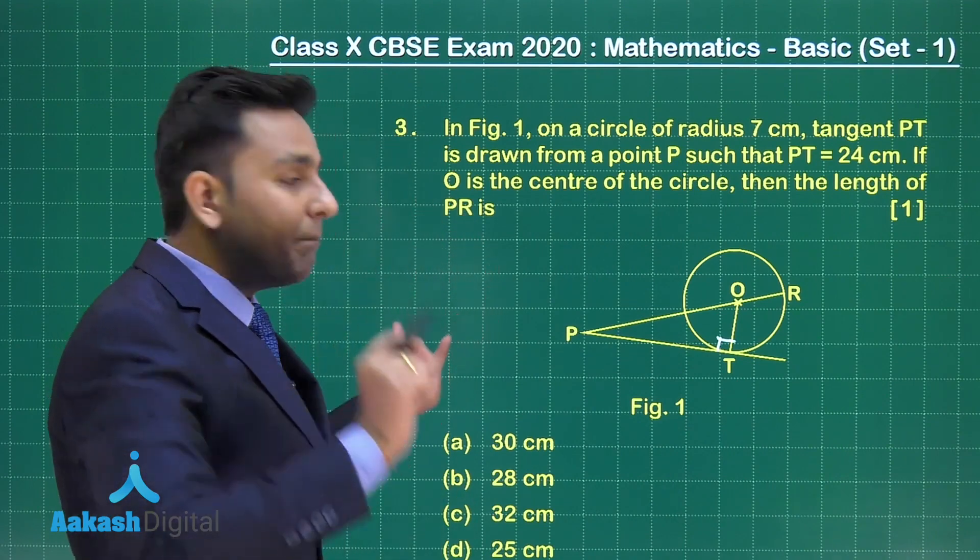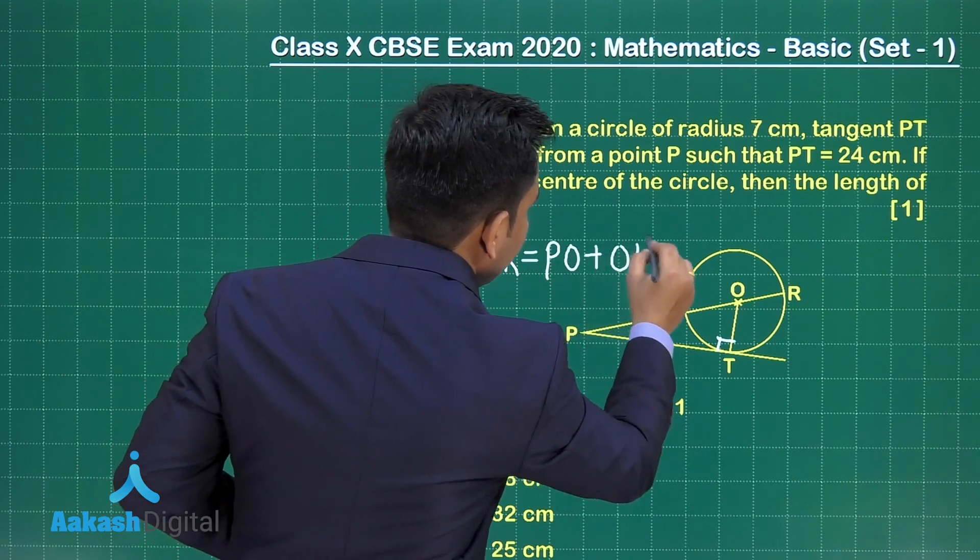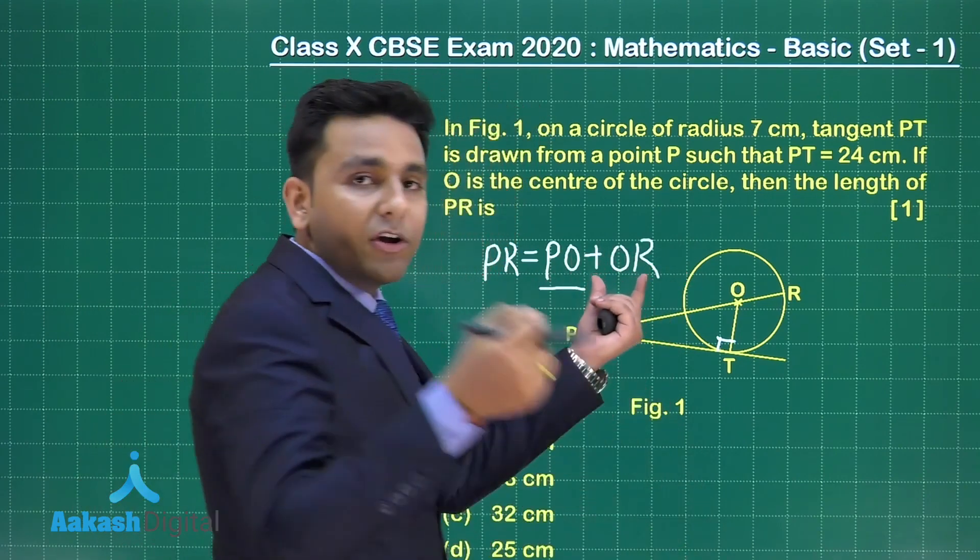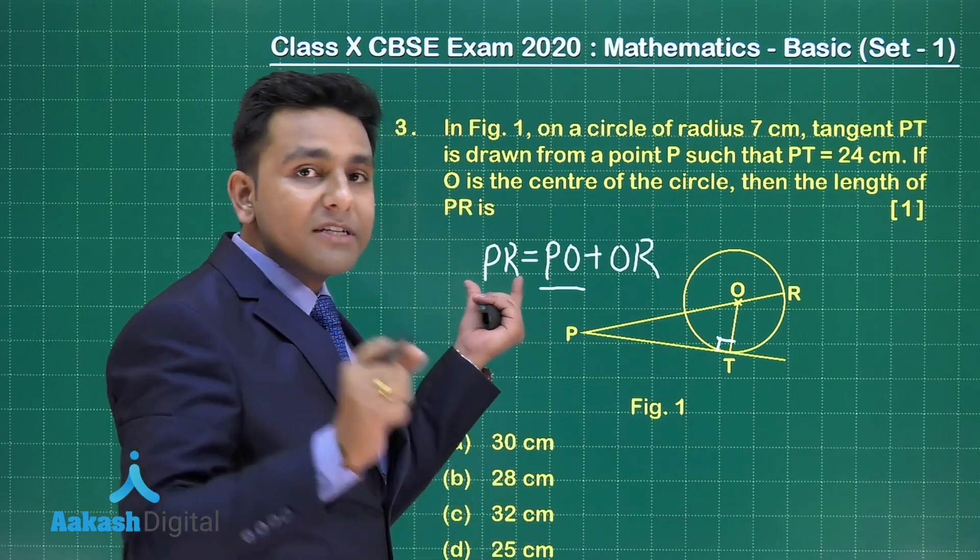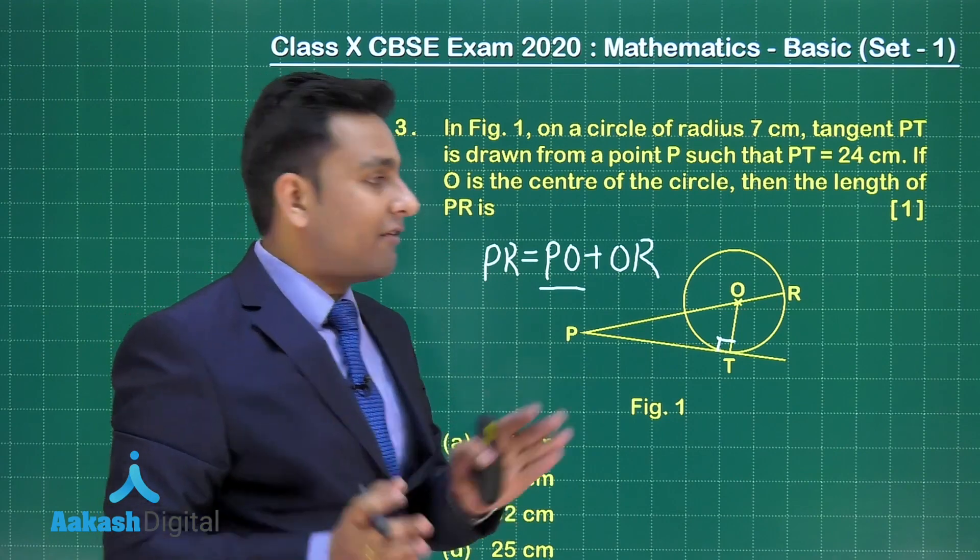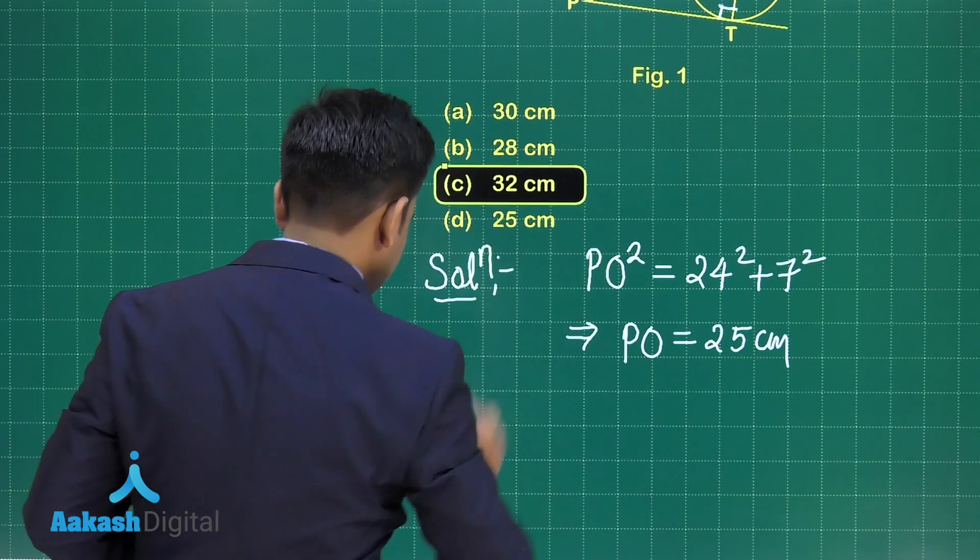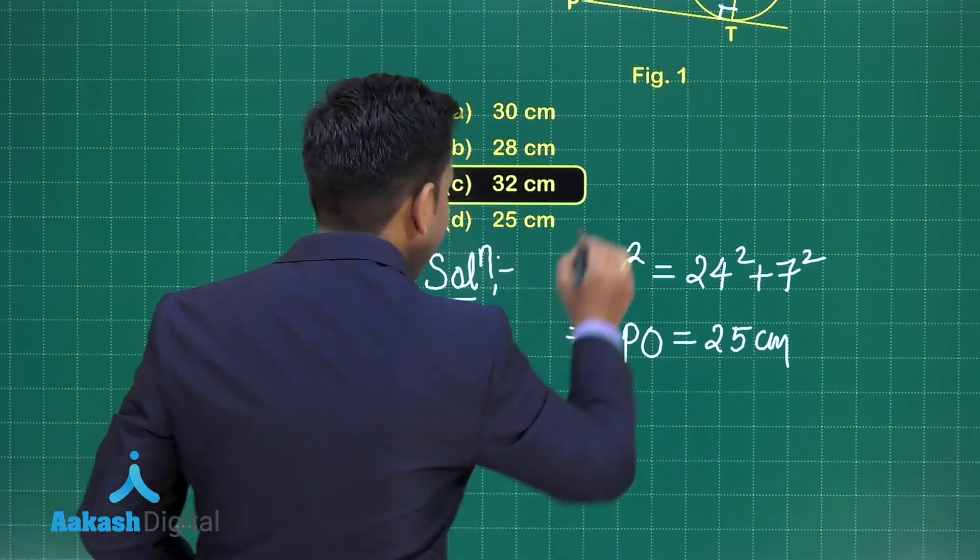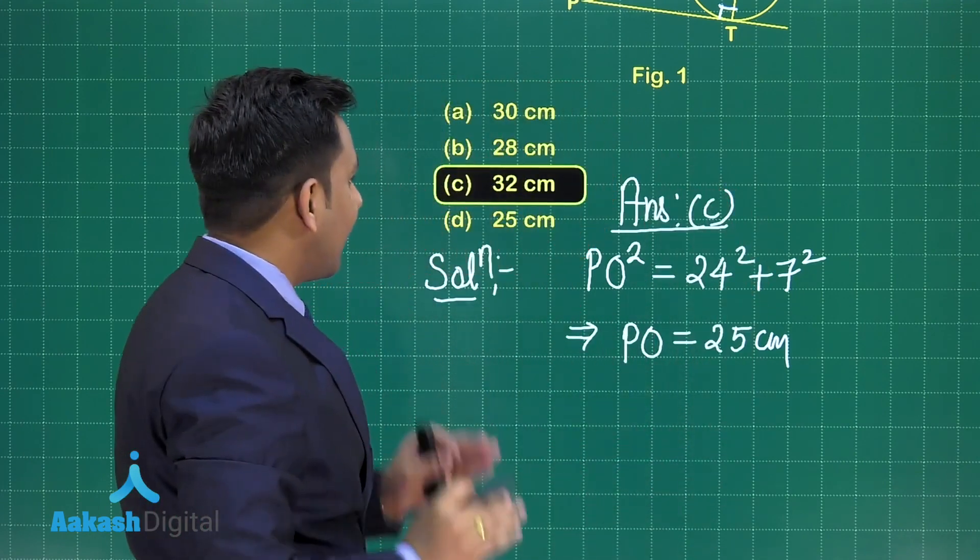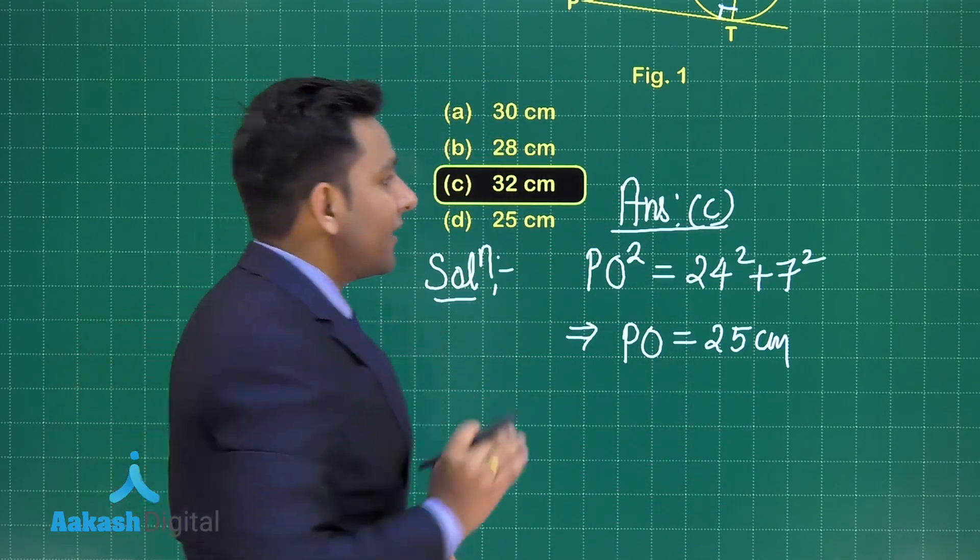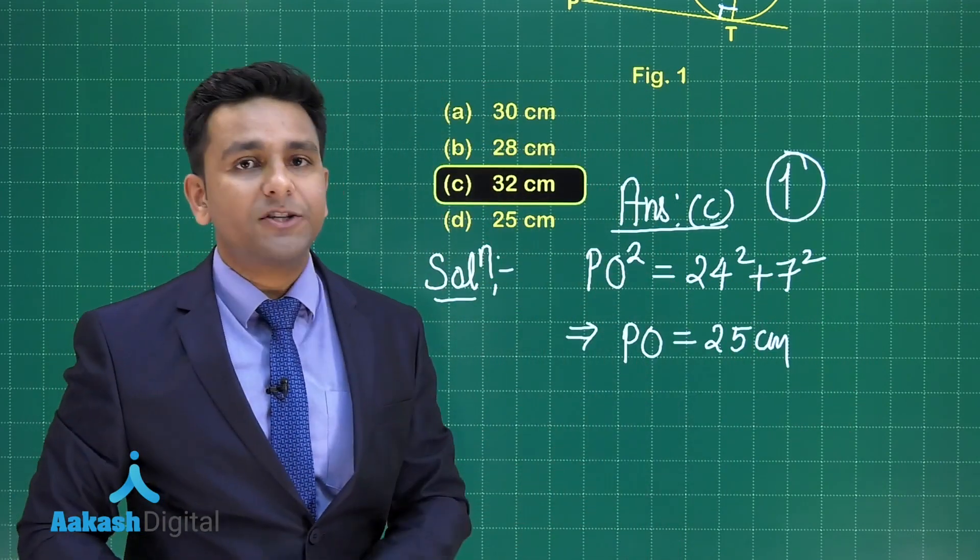The length of line segment PR. That means PR equals PO plus OR. PO is 25 centimeter. OR is again one of the radii of this circle, which is of length 7 centimeter. So the length of this line segment PR is 25 plus 7, that is 32. Out of the given four options, we can see that it is given in option number C. So the answer for this question is option number C. If you have taken option C, then you have one mark in score. Now proceed to the next question.